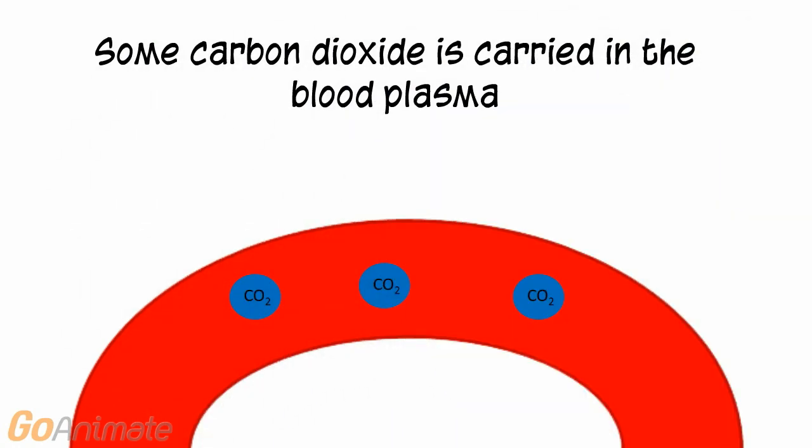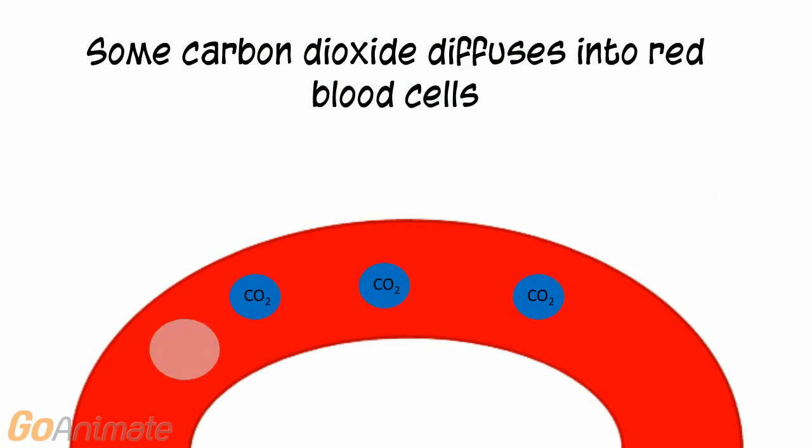A small amount of carbon dioxide is carried in the blood plasma. A little more is carried in the red blood cell by hemoglobin.